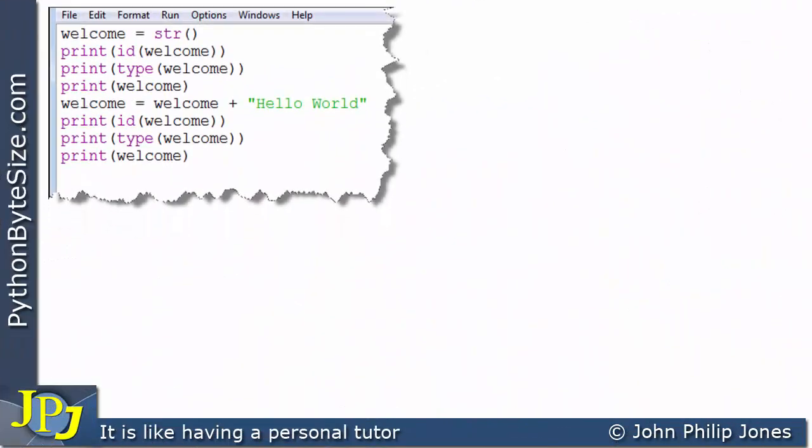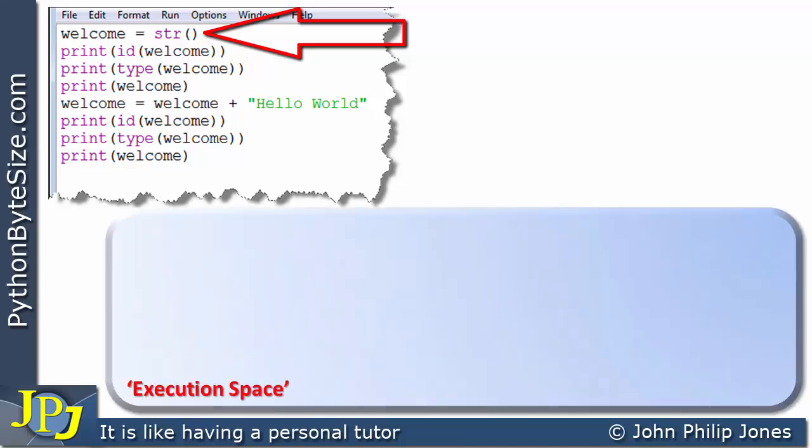Let's consider this computer program here. The first line of the program will be responsible for producing an instance of the string class, and in fact the instance will be an empty string, and we can see this animation consistent with what we've done in the past.